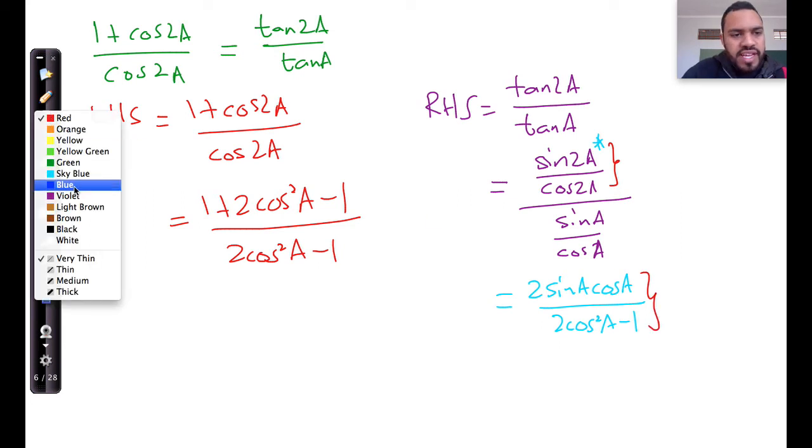Now, tip in times says, okay, I'm going to multiply that, and I'm going to use the reciprocal of sin over cos a, which is cos a, over sin a.